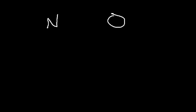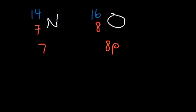Let's compare nitrogen and oxygen. Nitrogen has an atomic number of 7 and a mass number of 14, and oxygen has an atomic number of 8 and a mass number of 16. Oxygen has 8 protons, nitrogen has 7. The number of protons is the same as the atomic number. As you go to the right, the number of protons increases, and there's something called effective nuclear charge that goes up as well, causing atomic size to decrease. The more protons you have, the more they pull the electrons towards the nucleus, making the atom smaller.